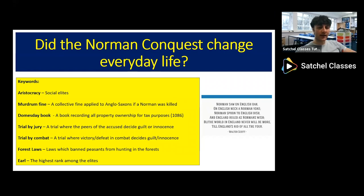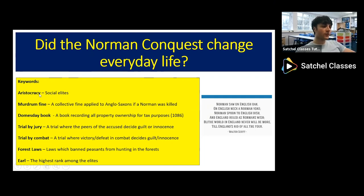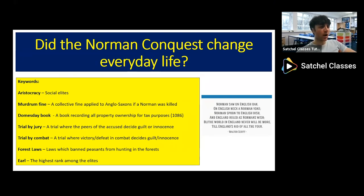You'll want to start by getting a pen and paper so you can write things down, and copy out the title and the following keywords. First, we have 'aristocracy' — a word that means all of the social elites in a country, often associated with owning land. Another term for it is 'ruling class.'